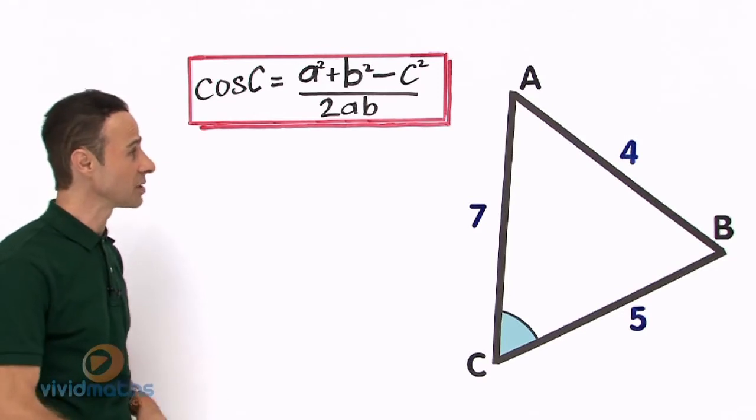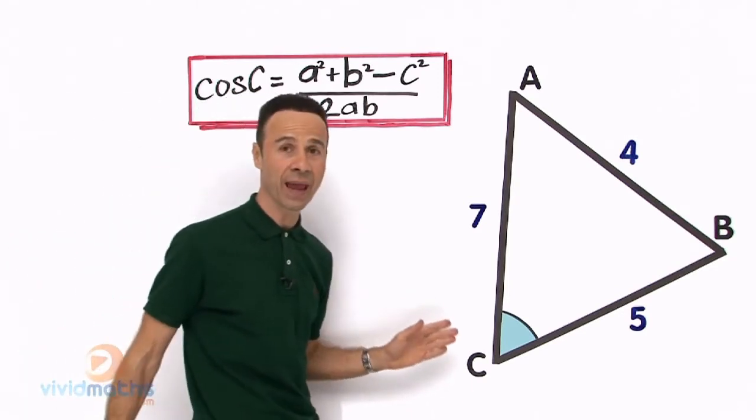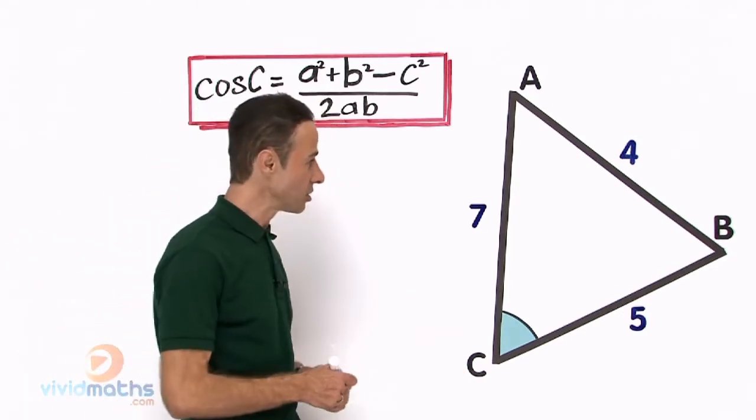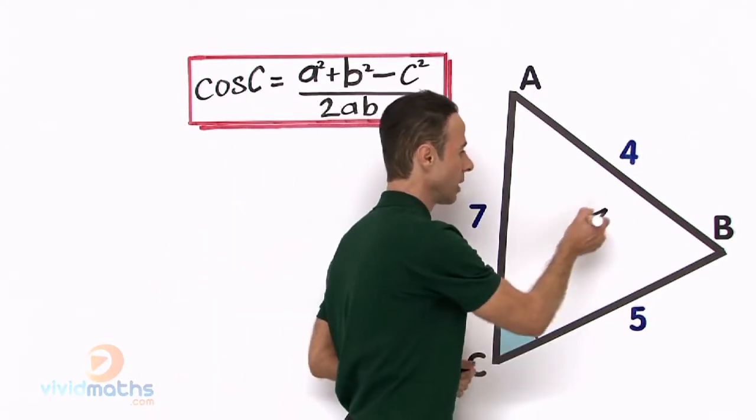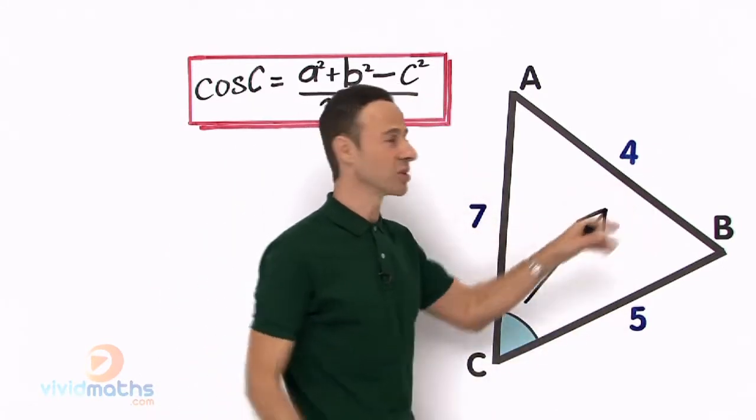So let us take it in the first step. First step is the label. So let us have a look here, we are looking for the angle C down here and directly opposite right up there is the little c, that is the length and that is 4.